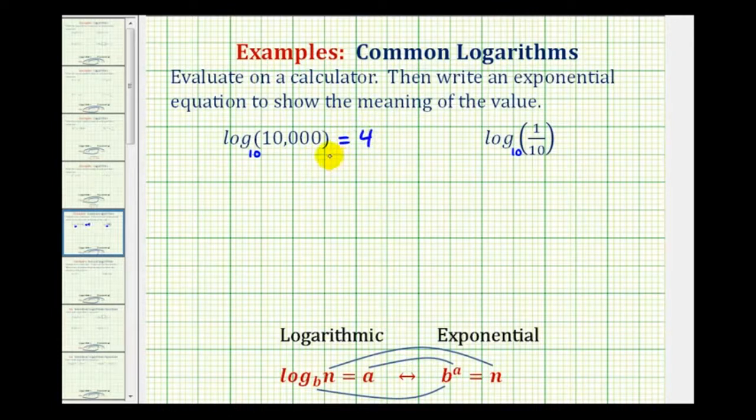The second part is we want to write an exponential equation to explain why this is equal to four. Well, the reason it's equal to four is because our base ten raised to the fourth power is equal to ten thousand.